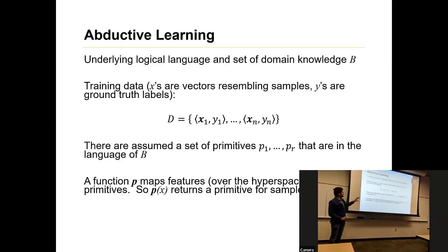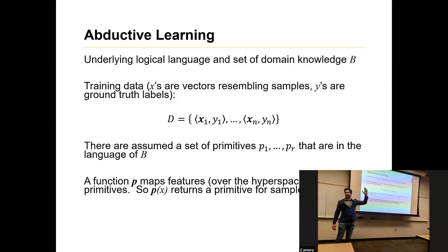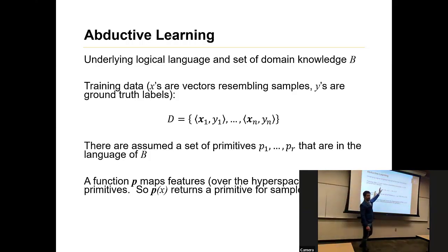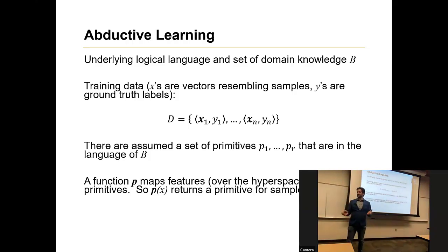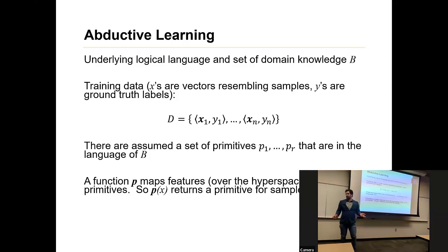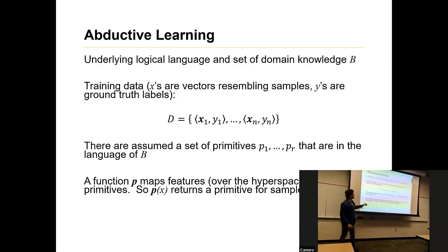Here's the setup for abductive learning. We have some underlying logical language and a set of domain knowledge B. Some of the papers use KB for knowledge base, some use B. Think of this as a logic program — typically it's going to consist of rules in most of this work.